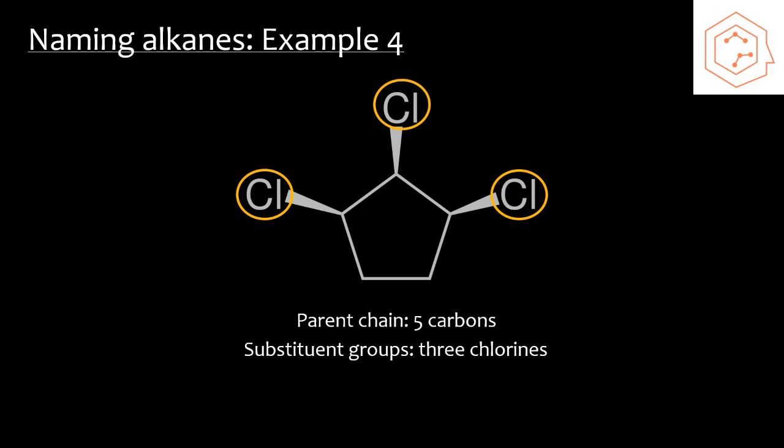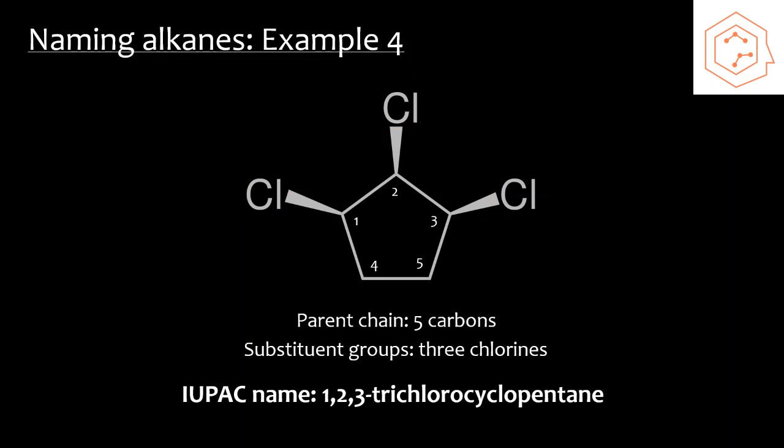Next, we want to number the carbons so that the substituents are connected to the carbon with the lowest number. The most ideal situation is if you name them where each chlorine is attached to carbon 1, 2, and 3. It doesn't matter if you start with the chlorine on the left or the chlorine on the right, because they're going to lead to the same results. When you combine all this information, the final IUPAC name will be 1,2,3-trichlorocyclopentane.